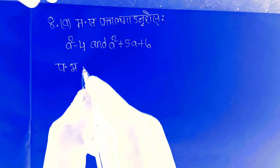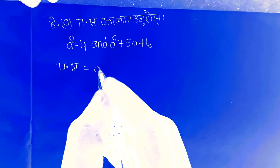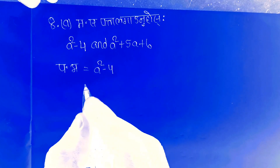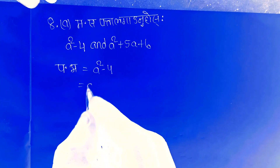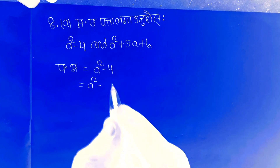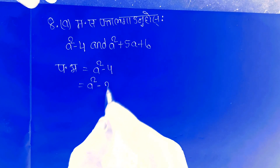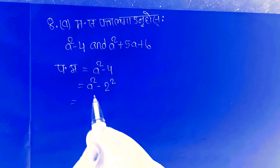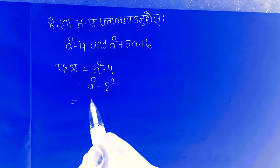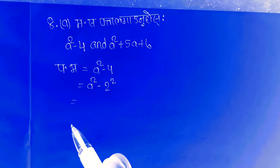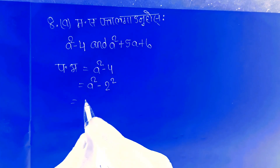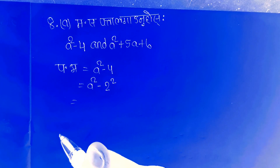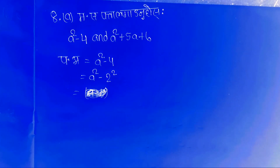A squared minus 4 is equal to a squared minus b squared. A squared minus b squared is equal to a minus b times a plus b.